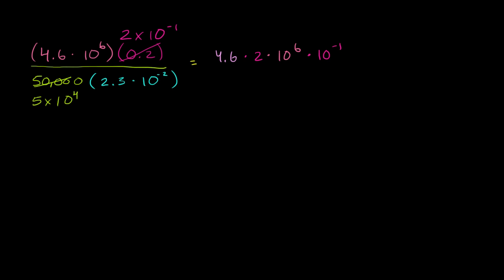Times 10 to the negative 1. And then in the denominator, I've got 5 times 2.3 times 10 to the fourth times 10 to the negative 2.